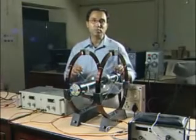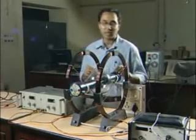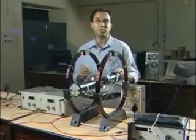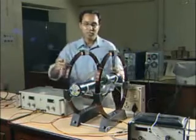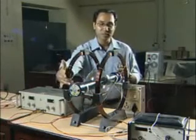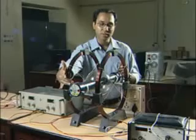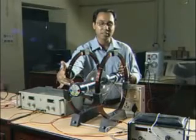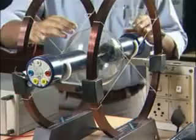This cathode ray tube consists of an anode and cathode which is used for accelerating the electrons. It is a tube which is filled with argon gas.